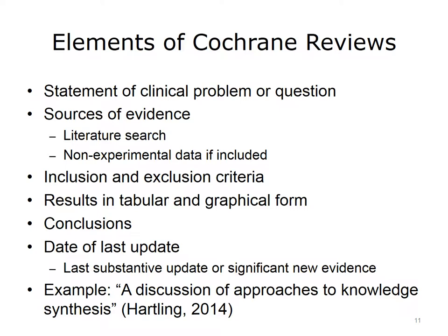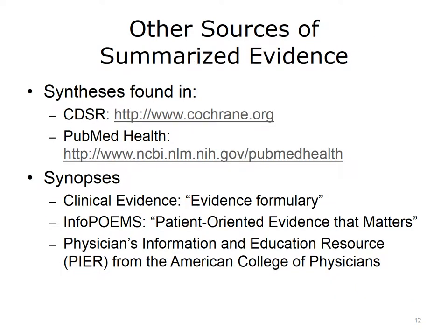There are many sources of syntheses and synopses. The Cochrane Database of Systematic Reviews and PubMed Health from the National Library of Medicine are both excellent resources for syntheses. Synopses are also offered by publications such as Clinical Evidence, which bills itself as an evidence formulary and draws on Cochrane reviews and other syntheses and individual studies to summarize evidence. Another important resource for synopses is InfoPoems — POEMS stands for Patient-Oriented Evidence that Matters. Finally, there's the PEER resource, the Physicians Information and Education Resource from the American College of Physicians.